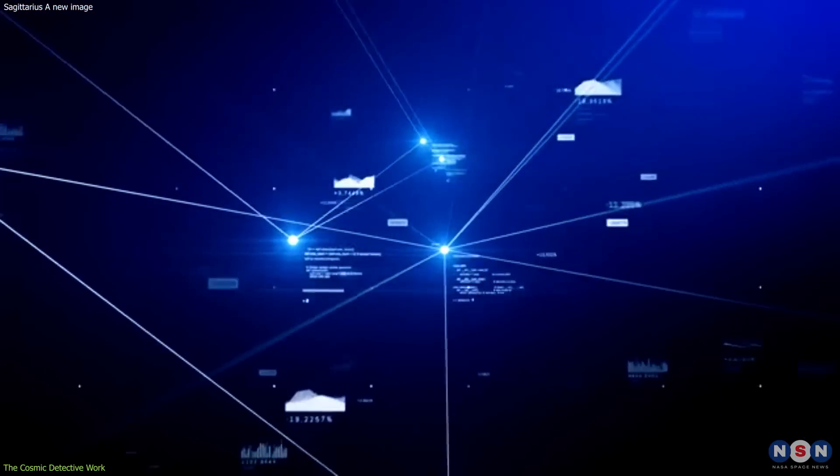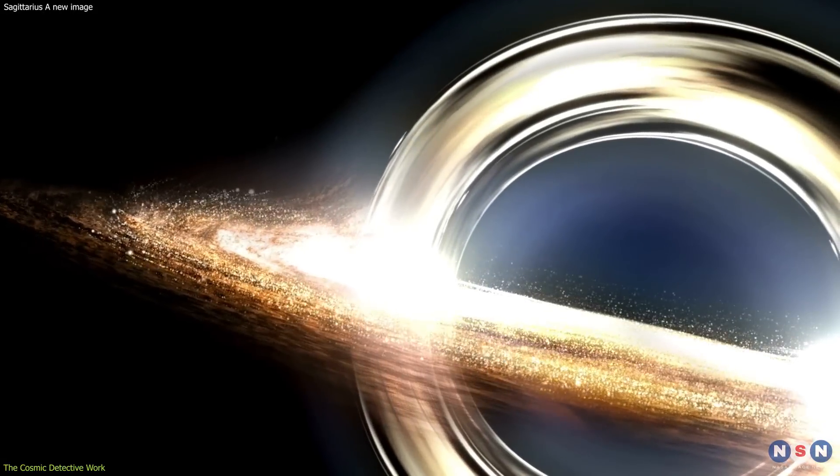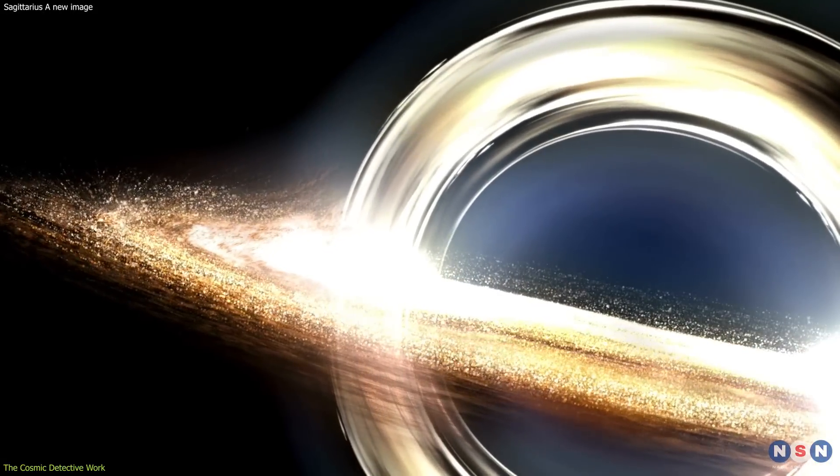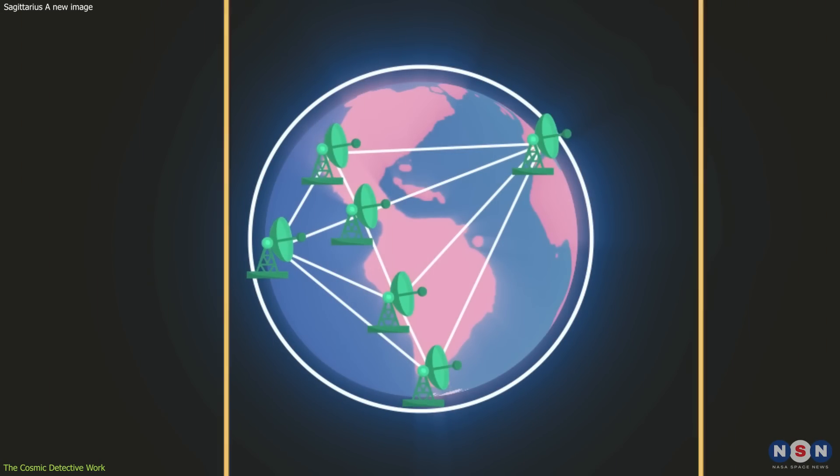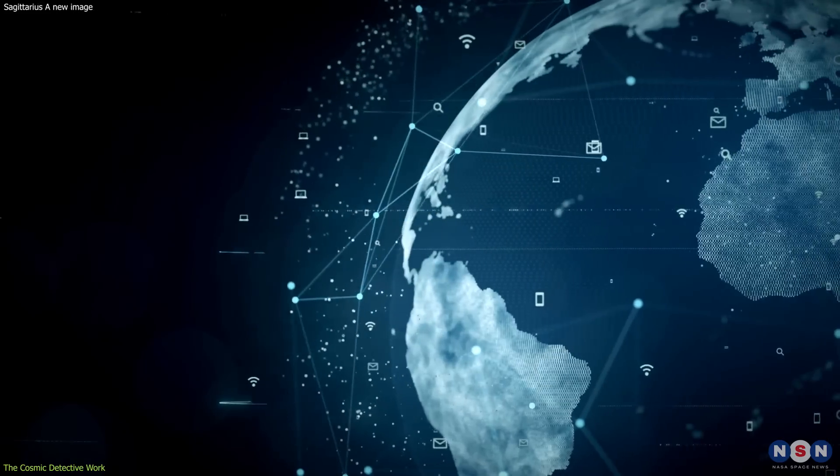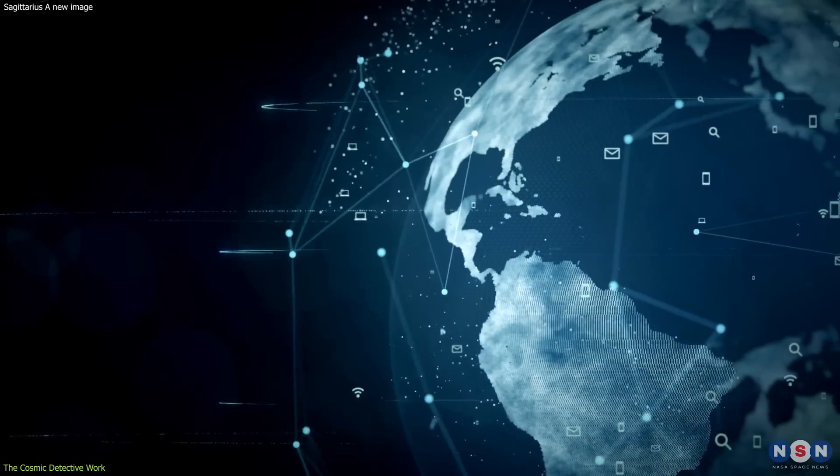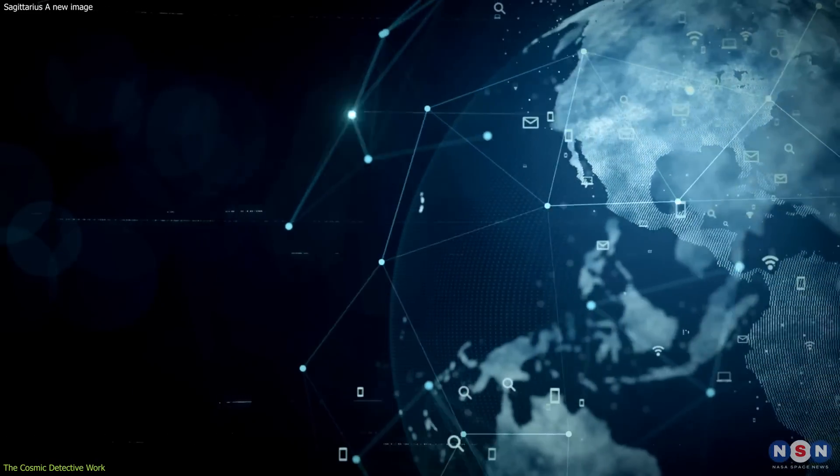The process of creating this image was no small feat. It required an intricate dance of data collection and processing. Radio waves emitted by the hot gas swirling around the black hole were captured by each telescope in the Event Horizon Telescope Network. The data, amounting to petabytes, was then synchronized using atomic clocks and combined using sophisticated algorithms to produce the final image.